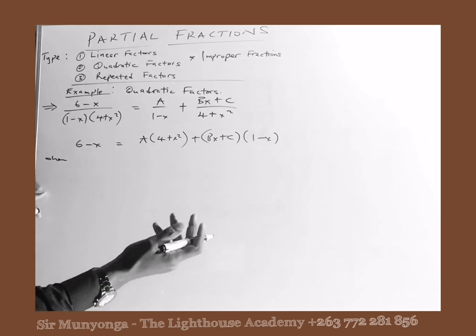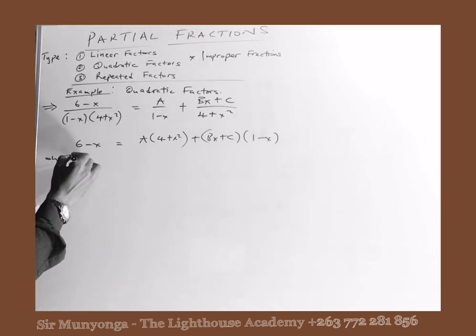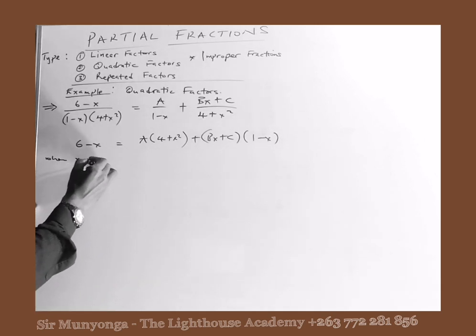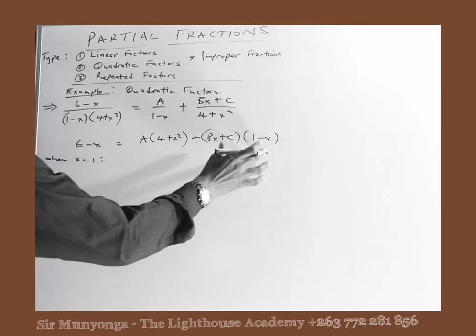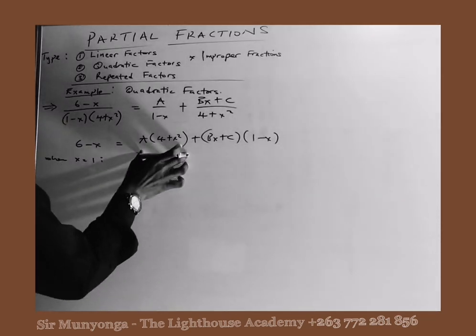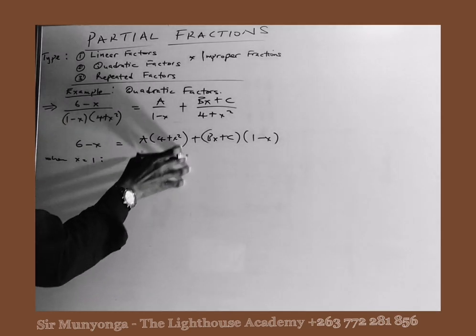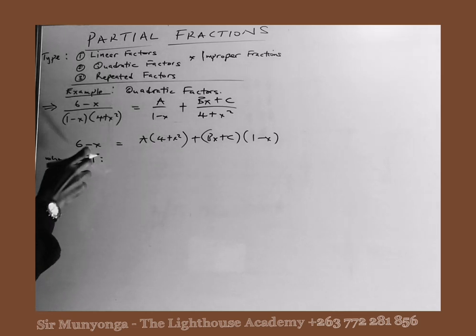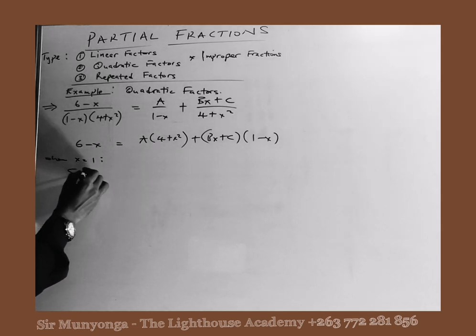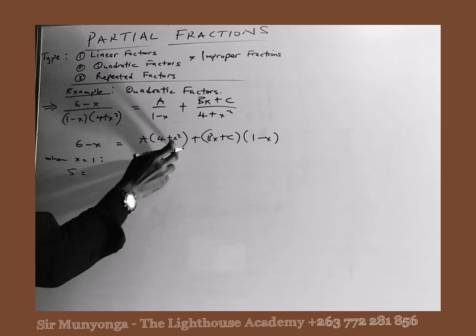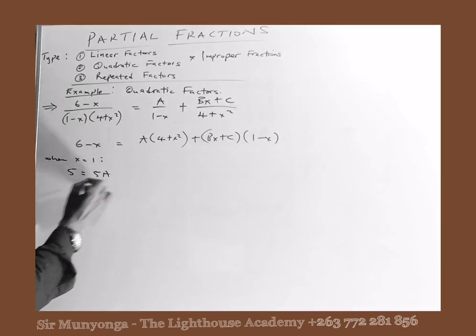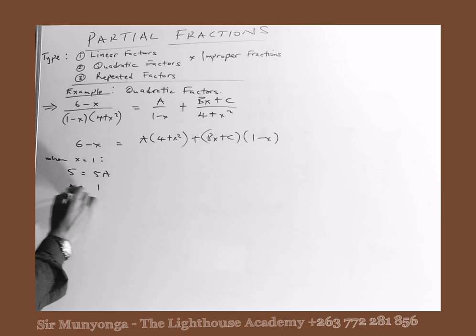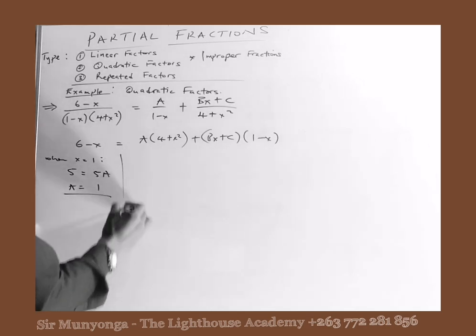When x is equal to 1, the linear factor (1 minus x) becomes zero, so we are left with the term containing A. The left-hand side becomes 6 minus 1, which is 5. On the right-hand side we get 5A, so A is equal to 1.